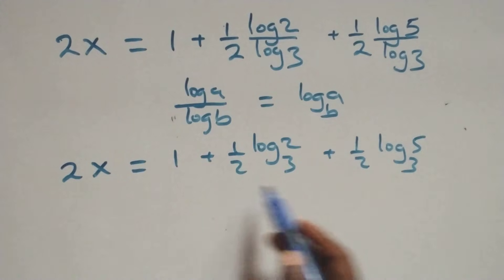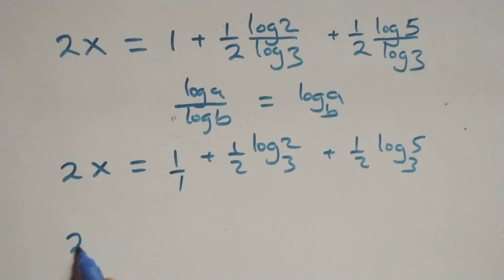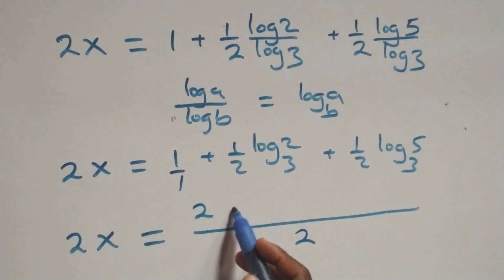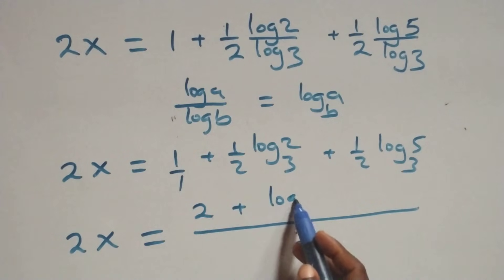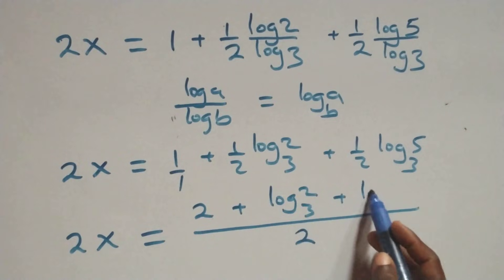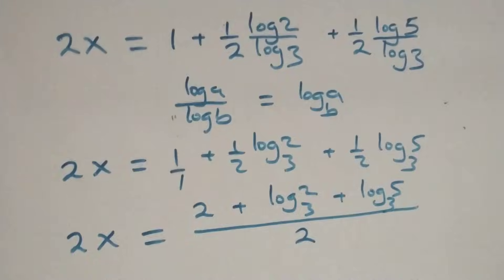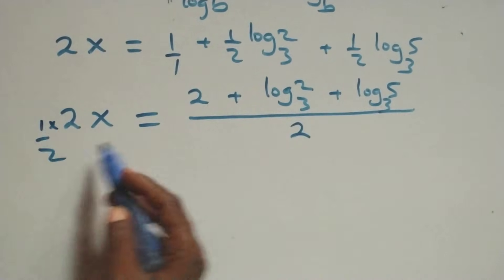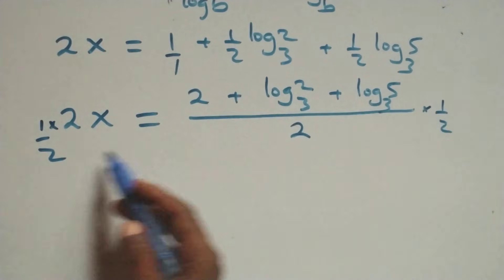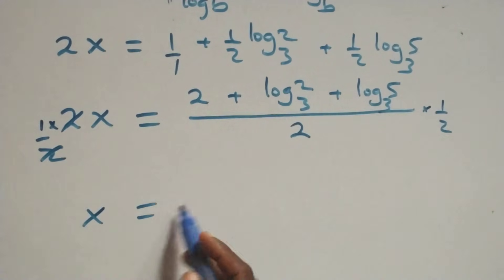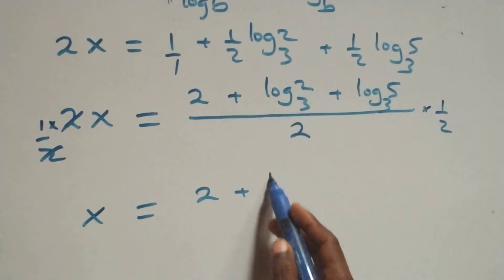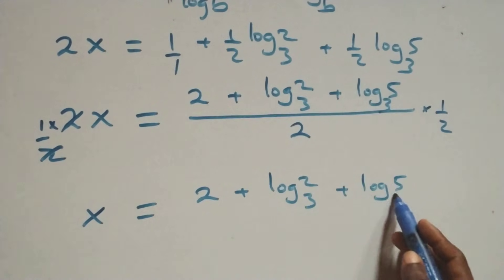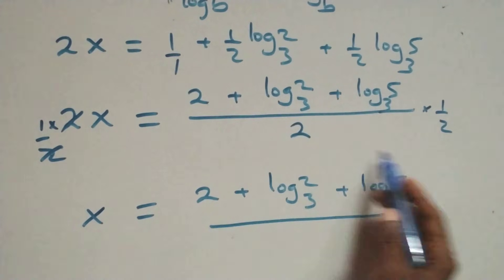We bring the right-hand side together as one fraction over 2. This becomes 2x equals 2 plus log base 3 of 2 plus log base 3 of 5, all over 2. Then we multiply both sides by one-half. The 2 on the left cancels, giving x equals 2 plus log base 3 of 2 plus log base 3 of 5, all over 4.